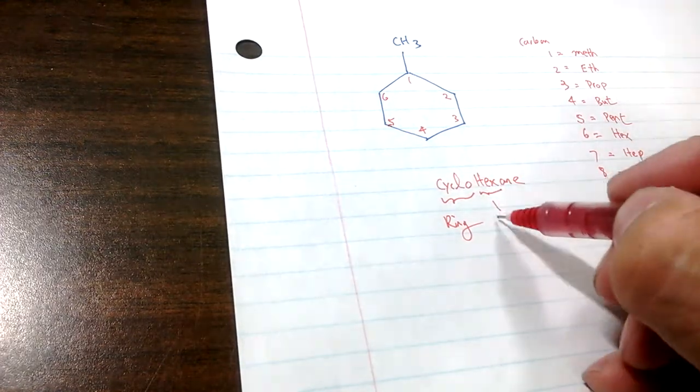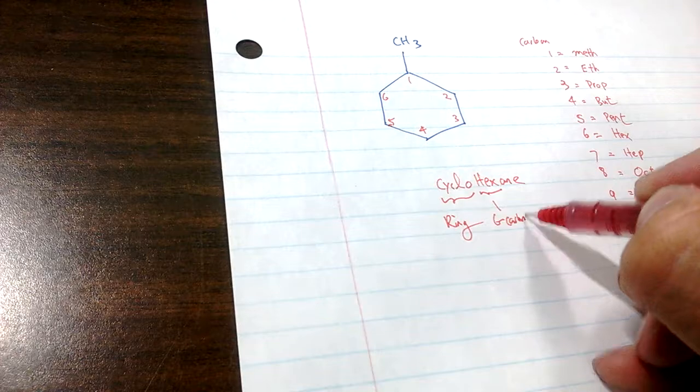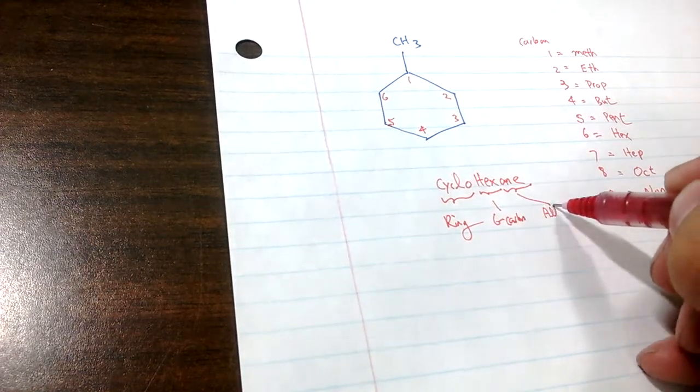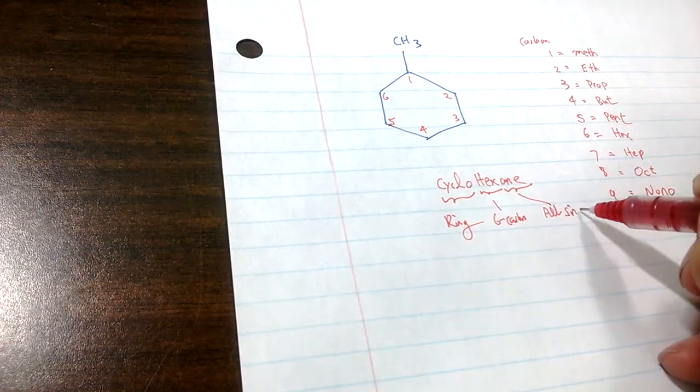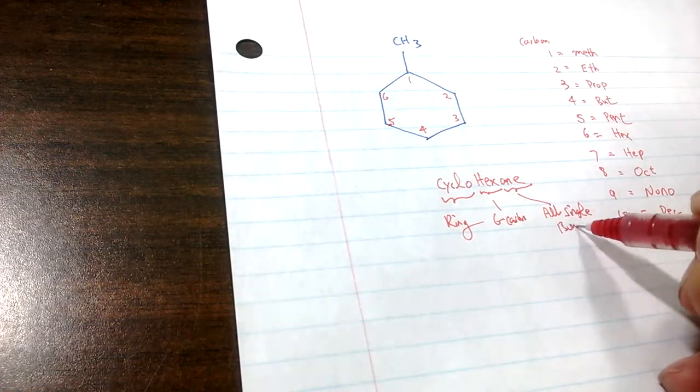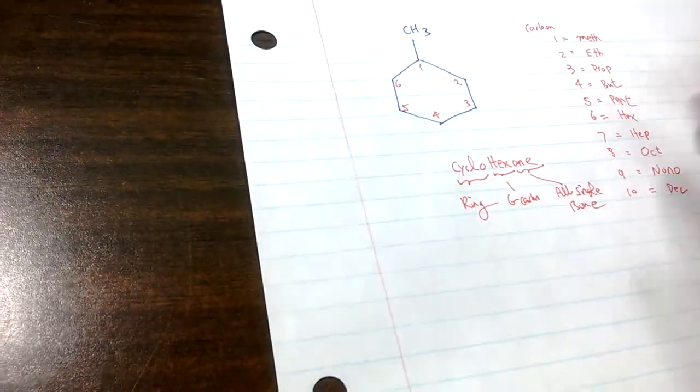So this is six carbon. A-N-E means all single bond, so all single bond.